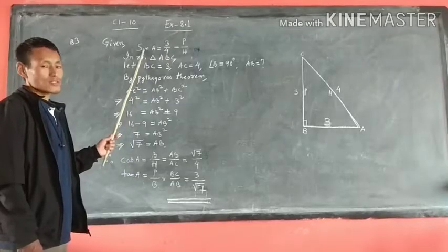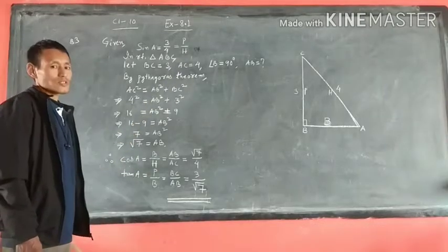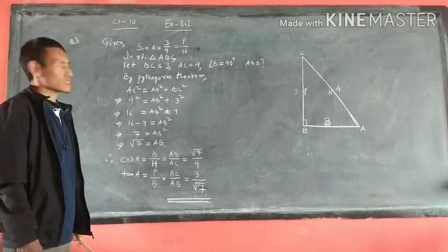Sine is given by the ratio of perpendicular to hypotenuse. Here students, we are going to find out the base.